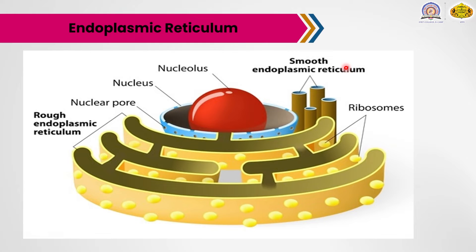The endoplasmic reticulum is an important organelle suspended in the cytoplasm. These are vacuole or cavity-like structures concentrated in the endoplasmic portions of the cytoplasm, and therefore known as the endoplasmic reticulum. The name is derived from the fact that under the light microscope it looks like a net form within the cytoplasm.